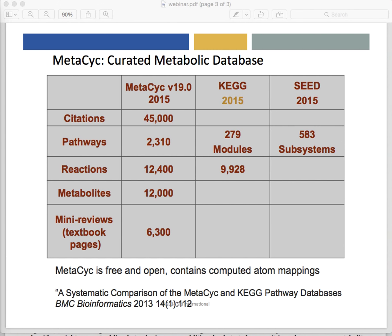Let me clarify the difference between MetaPsych and the organism-specific PGDBs in Biopsych. MetaPsych is unique within Biopsych in that it is a multi-organism database containing curated, experimentally determined pathways from thousands of organisms. For example, MetaPsych would contain only those Pseudomonas aeruginosa pathways that our curators have extracted from the literature. On the other hand, a Biopsych Tier 3 Pseudomonas aeruginosa database contains all pathways that were computationally predicted for that organism. Thus, a Biopsych database attempts to provide a complete picture of the metabolic network of the organism and contains the genome of the organism, whereas MetaPsych contains literature-derived pathways only and does not contain the full genome of any organism.